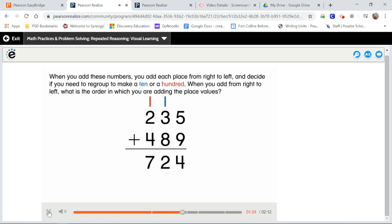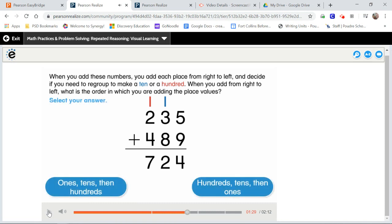When you add from right to left, what is the order in which you are adding the place values? Select your answer. Okay, so I'm going to give you a minute to think about this, thinking about how we always start over here on the right side when we're using the stack it up method. And I see that this one would make the most sense because it's ones, tens, and then the hundreds last.